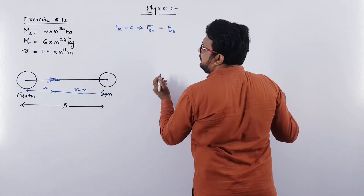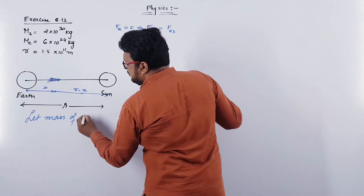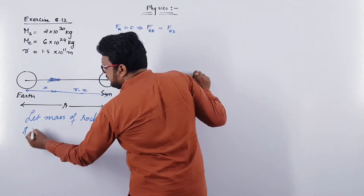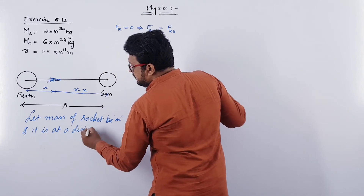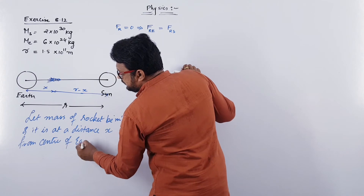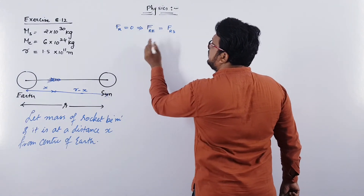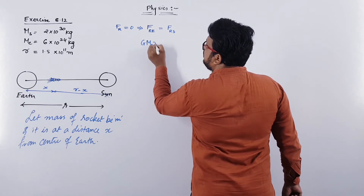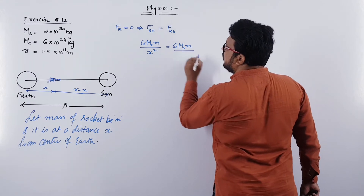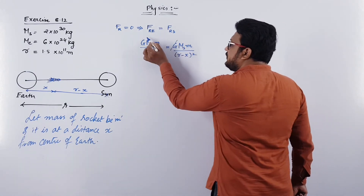Let the mass of the rocket be m. The rocket is at a distance x from the center of Earth where the gravitational force is zero. The force acting between rocket and Earth is G × M_Earth × m / x², and this equals G × M_Sun × m / (r − x)², using the formula Gm₁m₂/r². G and G cancel out, and m and m cancel out.